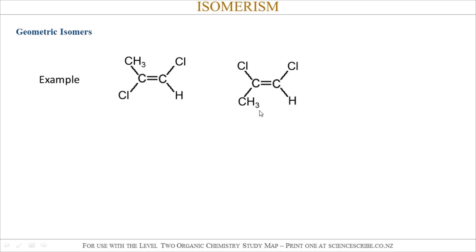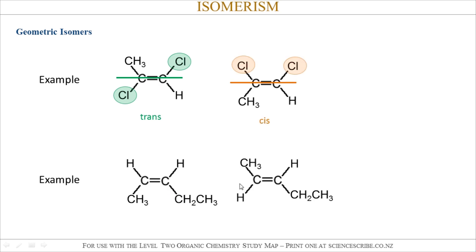Here are more examples. The first one is trans and the second one is cis. For the second pair: we have two identical groups on the same side of the double bond, so that's cis, and in the second one, the identical groups are on opposite sides of the double bond, so that's trans.